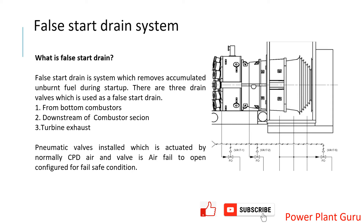Now you can see there are three drains — let me put the pointer. There is one drain from the bottom of the combustion section, another drain from the downstream of the combustion section at the lowest point, and a turbine exhaust drain. All those drains come out to atmosphere, and the operator has the opportunity to check whether sufficient air is coming from them. If started on liquid fuel, some liquid should also come out if there was no flame or if the flame initially came but was not stabilized.